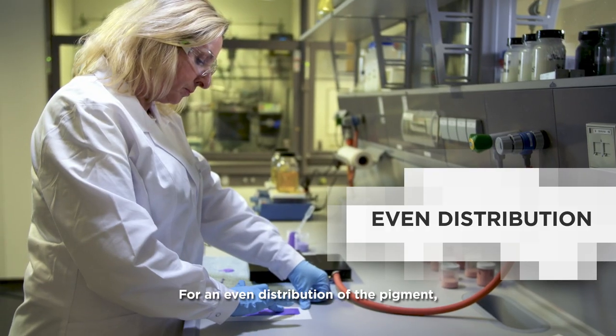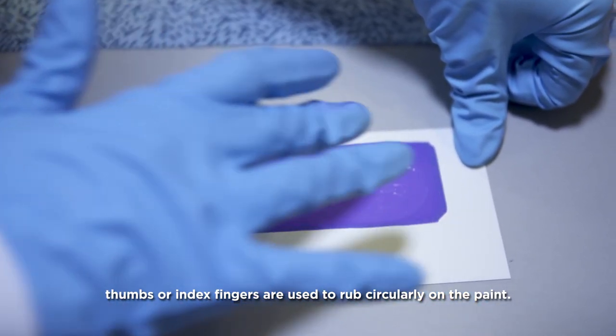For an even distribution of the pigment, thumbs or index fingers are used to rub circularly on the paint.